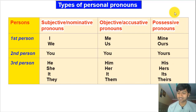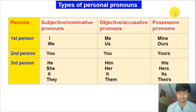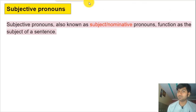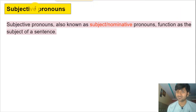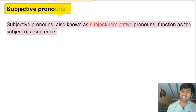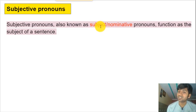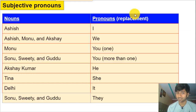Now let's understand all these kinds of pronouns — subjective, objective, and possessive — one by one. Number one: subjective pronouns. As the name suggests, these pronouns work as the subject of a sentence. That's why we call them subjective, nominative, or subject pronouns — they function as the subject. Let's look at some examples.